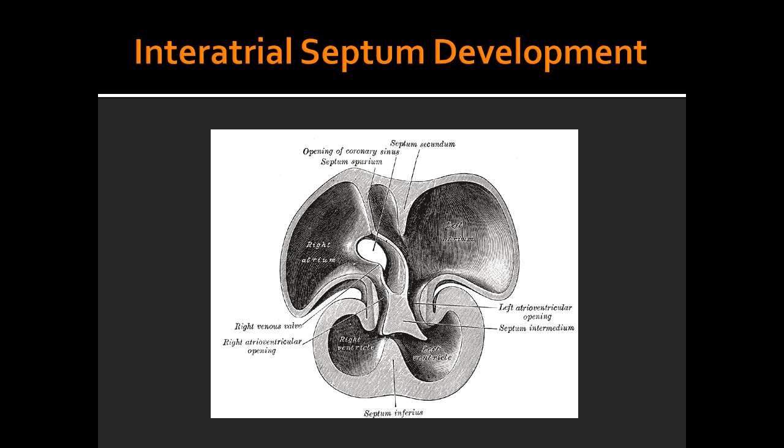What is happening on image 4 of the interatrial septum development? In image 4, you see that septum secundum contains a permanent opening called the foramen ovale.